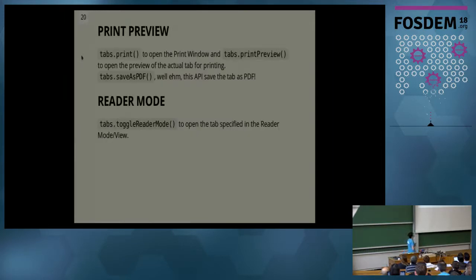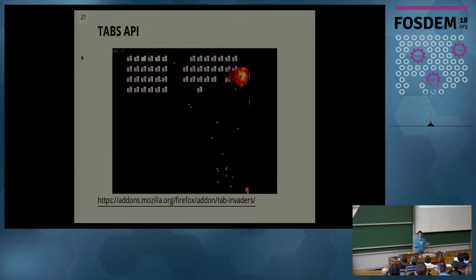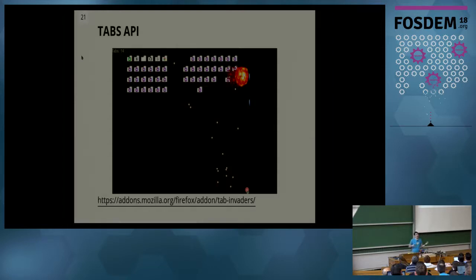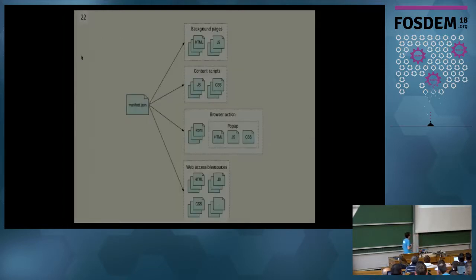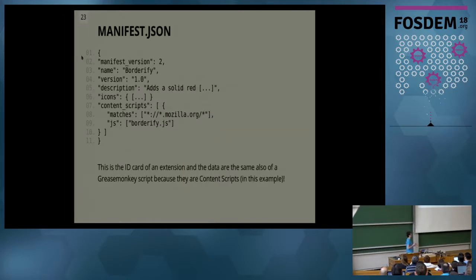We have also support for print preview and the reader mode API. I have to run because time is short. But this is very funny — I don't know how many people know Doom. There is a fork that, when you kill a monster, kills a process. We have a version that kills tabs, because the API enables us to do even this kind of thing. And this extension is a bunch of HTML, CSS, and JavaScript all together.